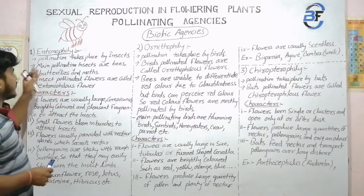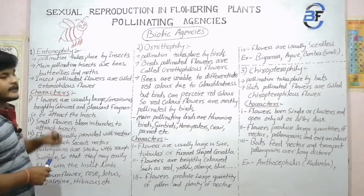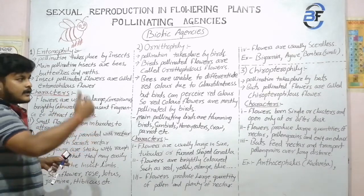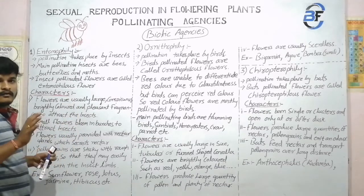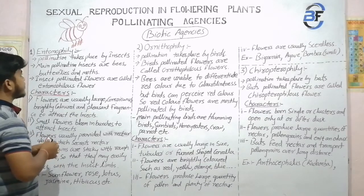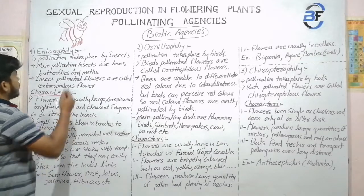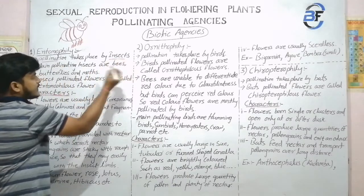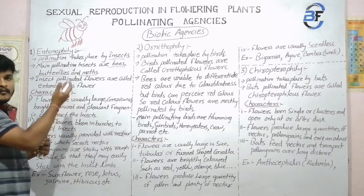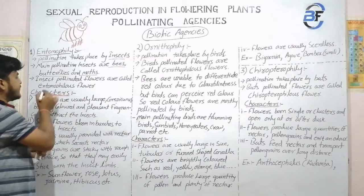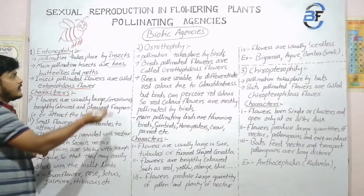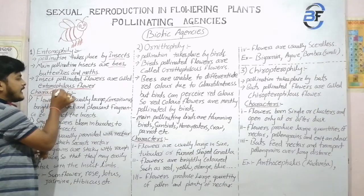The first type of Biotic Agencies is Entomophily, which includes insects. So first we study about insects. Pollination is mostly carried out by insects like honeybees, butterflies, or moths. These types of insects are mostly included in your Entomophily technique. Insect-pollinated flowers are called Entomophilous flowers — that means the flowers which are pollinated in your Entomophily technique are known as Entomophilous flowers.